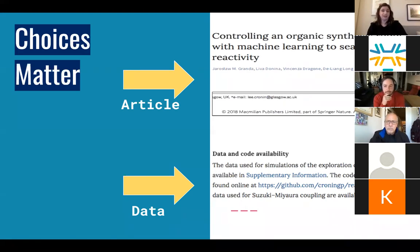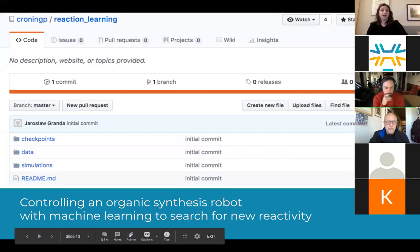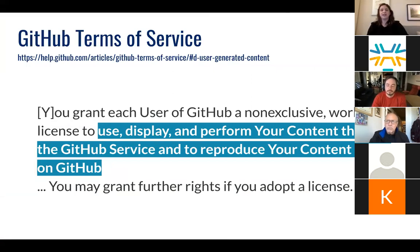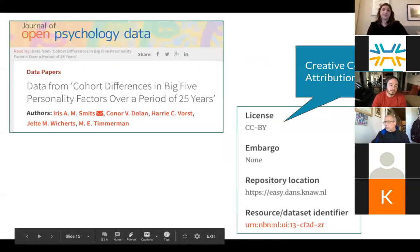What we're allowed to do with other people's data — including whether we're allowed to republish it — affects our own ability to create new knowledge. Take this published article in a Springer Nature journal and the statement about data and code accompanying it. The article is copyrighted by the publisher. The data and code availability statement indicates that the authors put their underlying data in GitHub. But if all they've done is deposited their data in GitHub, they haven't actually authorized you to do much with it. GitHub's terms of service say that by putting content on GitHub, anyone can use, display, perform, or reproduce the content — but only on GitHub. So in order to work with someone else's data beyond GitHub, the researchers would have needed to apply a license to the content, and they didn't.